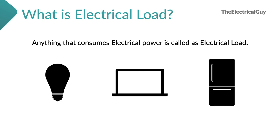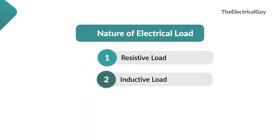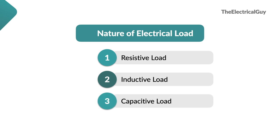Now if we look at the nature of such load, we can actually categorize them in 3 different types — resistive load, inductive load, and capacitive load. Now there can be other types also; for example, if you are working in a power distribution company, you can say we also have industrial load, residential load, commercial load, etc. We are not going to talk about those loads in this video — we are only going to talk about the basics, i.e. resistive, inductive, and capacitive loads.